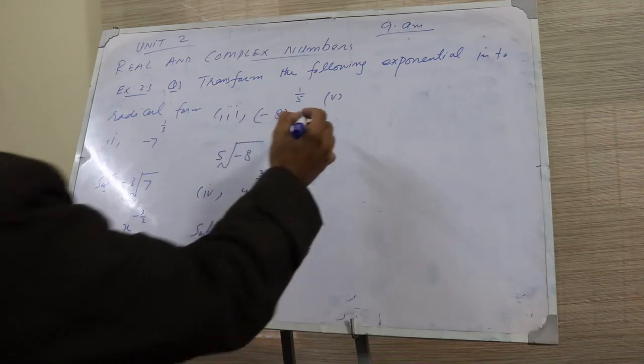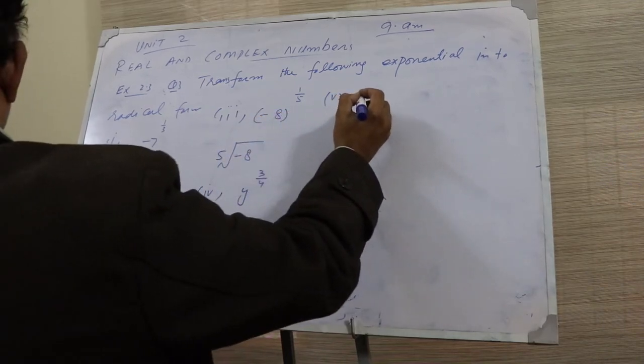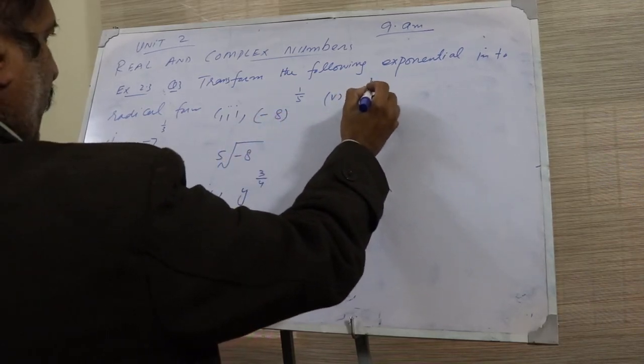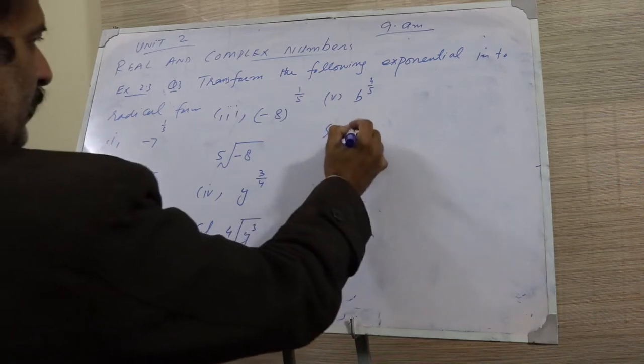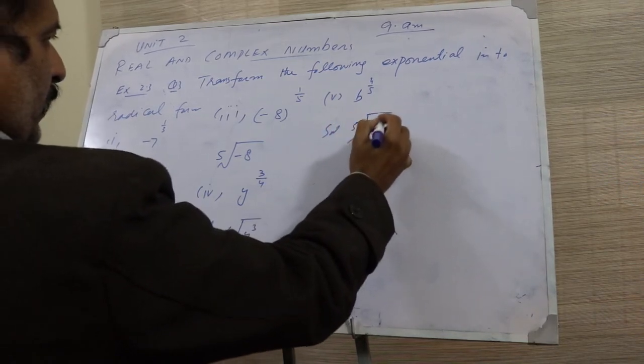Fifth: b power four over five. The radical form is fifth root of b power four.